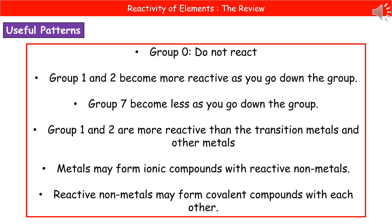Here are some useful patterns to help when considering the reactivity of elements. Group zero noble gases generally do not react. Group one and group two become more reactive as you go down the group, so further down those groups means more reactive. Group seven halogens become less reactive as you go down the group. Group one and two are more reactive than transition metals found in the middle and generally other metals. Metals may form ionic compounds with reactive non-metals, and reactive non-metals may form covalent compounds with each other.